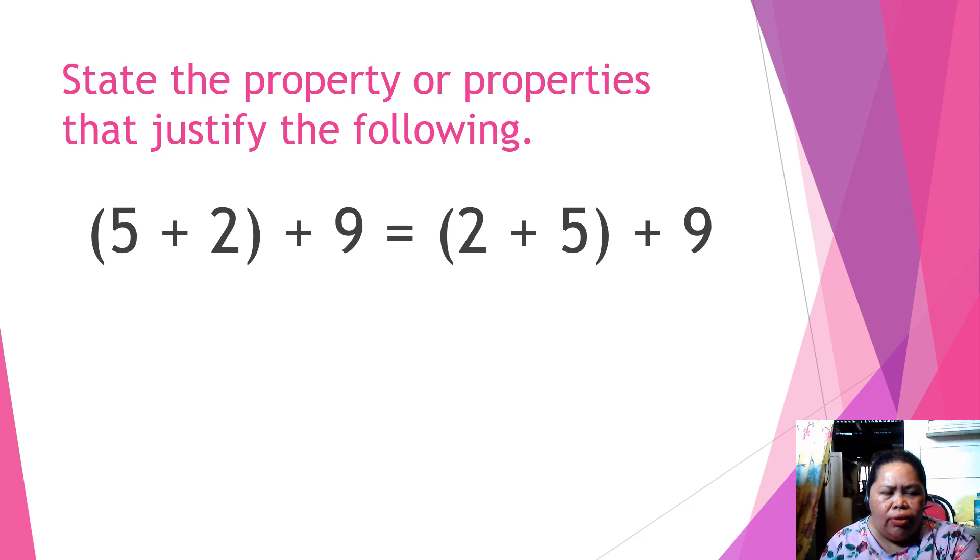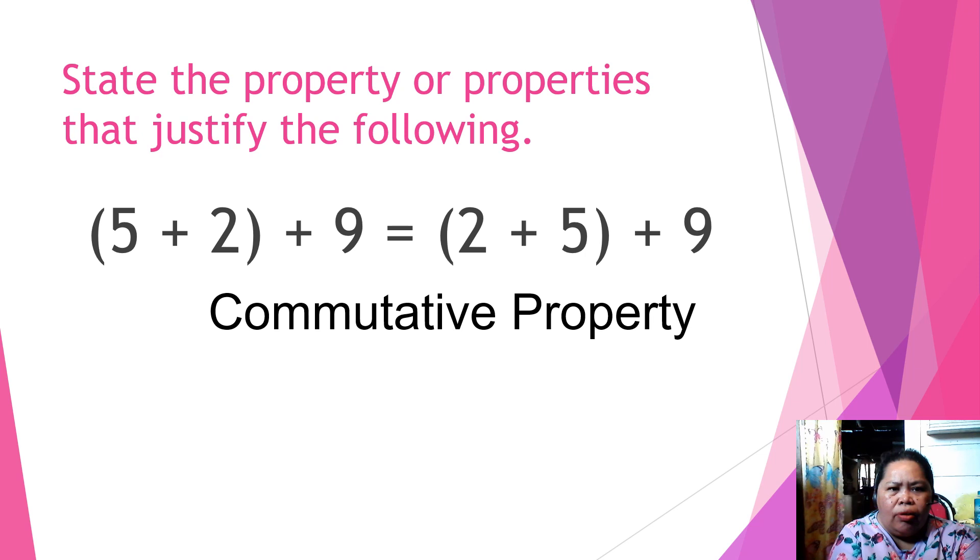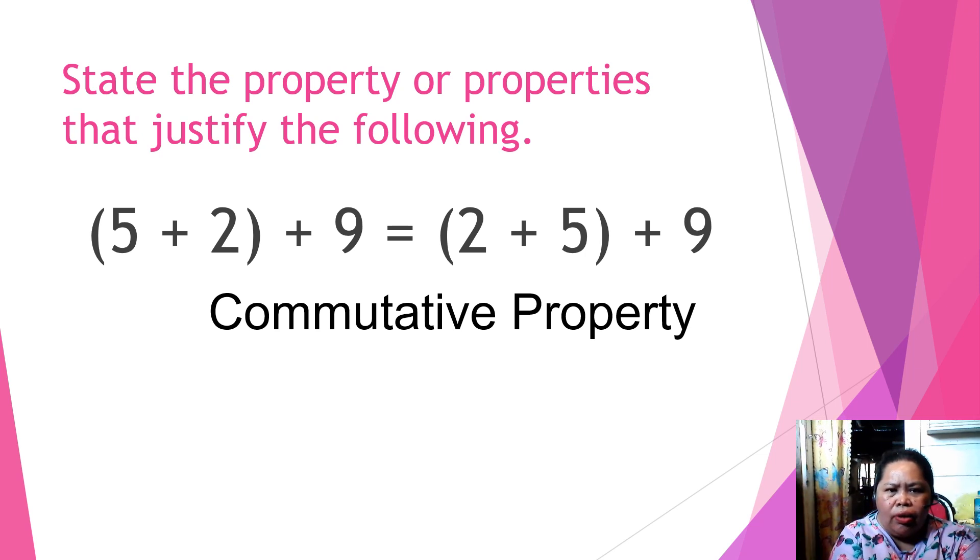Next. State the property. 5 plus 2 plus 9 is equal to 2 plus 5 plus 9. It is commutative property. Now, let us see another example.